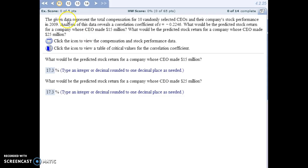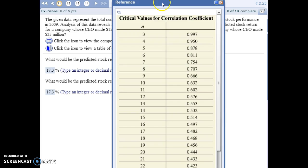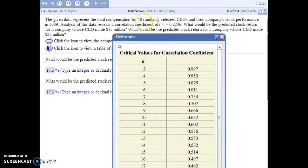For number 11, we're looking at the relationship between how much a CEO is paid and the stock return for the company. But from our data, it shows that our correlation coefficient is only negative 0.2246. So that's a value pretty close to zero. And in fact, if you look at our critical values, since there were 10 CEOs in the study, our critical value is 0.632.